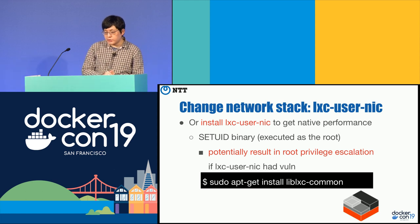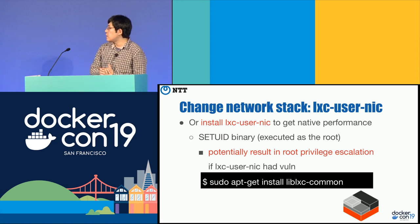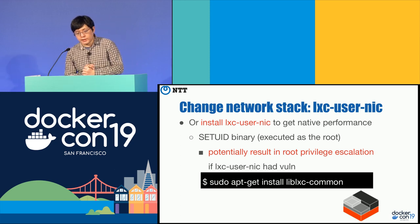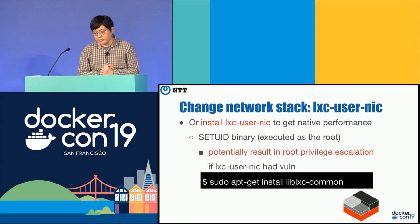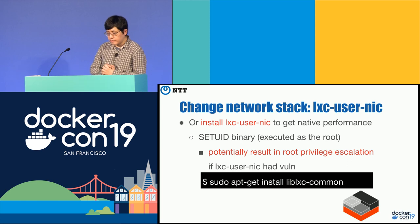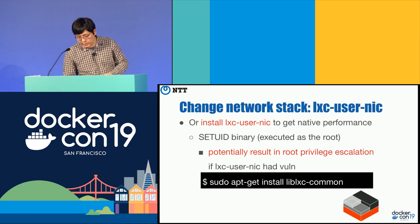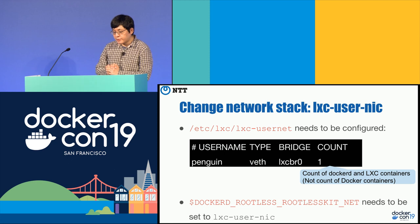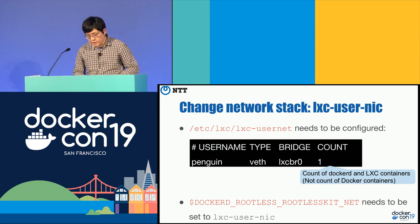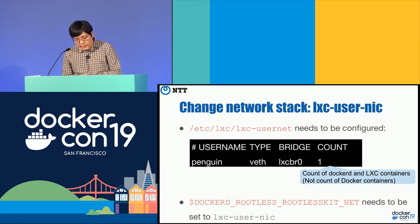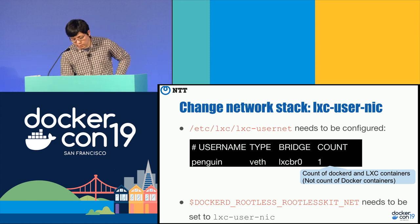You can also use lxc-user-nic, a helper binary from the LXC container engine project. lxc-user-nic has the setuid bit on the binary, so it's always executed as root — this potentially results in root privilege escalation if the binary has a vulnerability. But you can get native performance just like root-full Docker. You need to set up a config file under /etc/lxc/lxc-usernet and set the environment variable DOCKERD_ROOTLESS_ROOTLESSKIT_NET to use this binary.